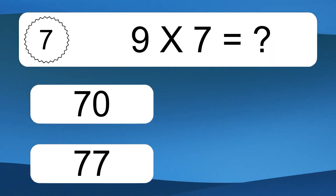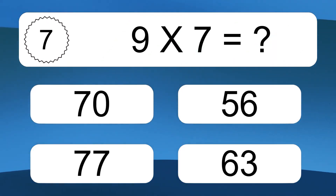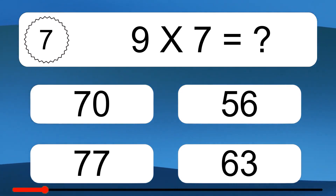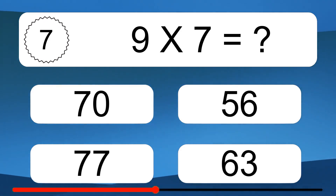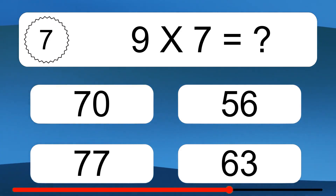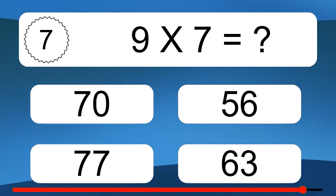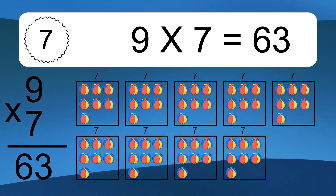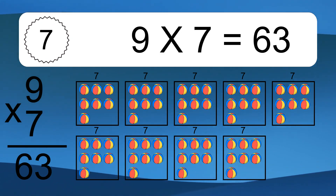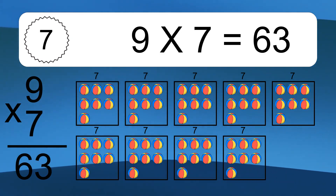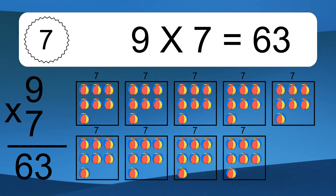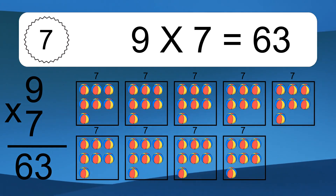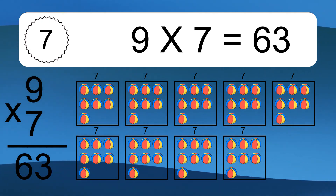9 times 7 equals what? 9 times 7 equals 63. We have 9 boxes, and each box has 7 colorful balls inside. If you count all the balls in all the boxes together, you will have 9 times 7 balls. This equals 63 balls.